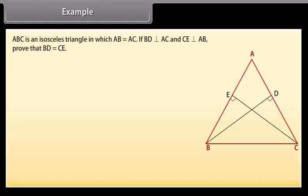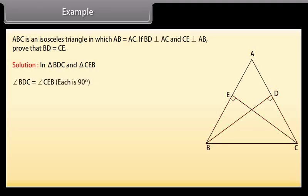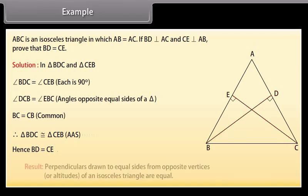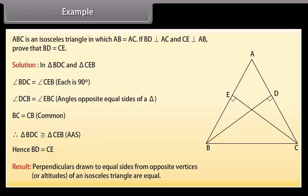ABC is an isosceles triangle in which AB is equal to AC. If BD is perpendicular to AC and CE is perpendicular to AB, prove that BD is equal to CE. Solution: In triangle BDC and triangle CEB, angle BDC is equal to angle CEB because each angle is 90 degrees. Angle DCB is equal to angle EBC because angles opposite equal sides of a triangle are equal. And BC is equal to BC because they are common. Therefore, triangle BDC is congruent to triangle CEB by AAS. Hence, BD is equal to CE. This example gives us a result which says that perpendiculars drawn to equal sides from opposite vertices, or altitudes of an isosceles triangle, are equal.